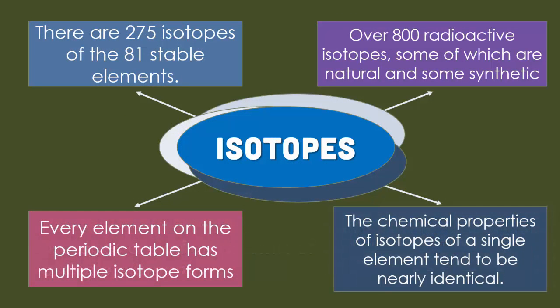There are isotopes for every element on the periodic table. Of the 81 stable elements of the periodic table — those that are not radioactive — there are about 275. So when we look at our periodic table, we're just looking at the most common ones. Of over 800 radioactive isotopes, a lot of them are going to be synthetic, which is man-made, and a lot are also found naturally breaking down in our atmosphere and in the dirt.